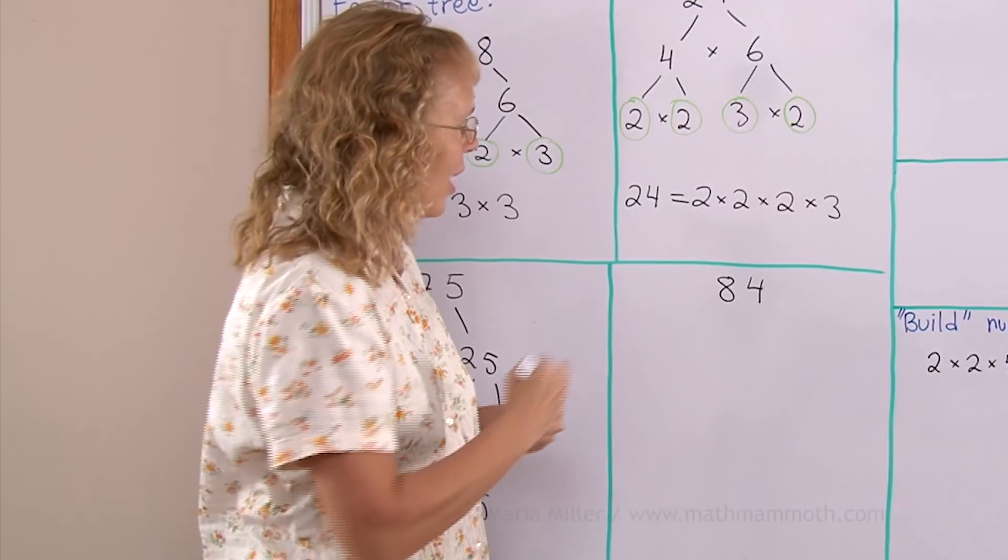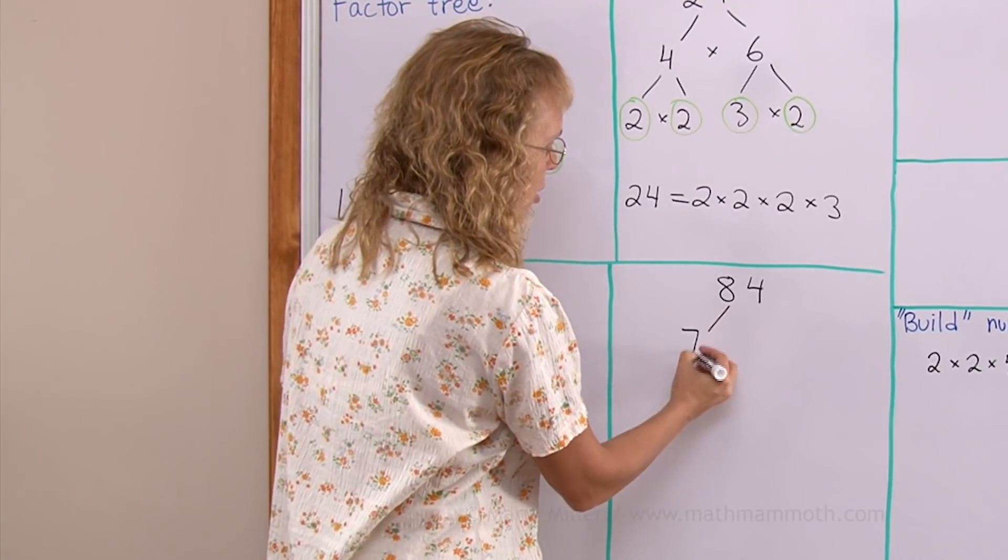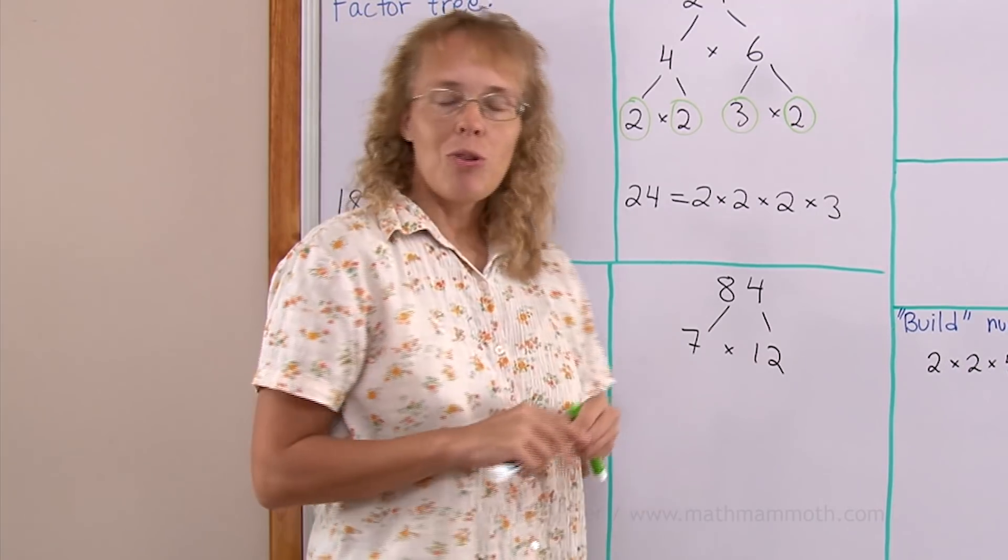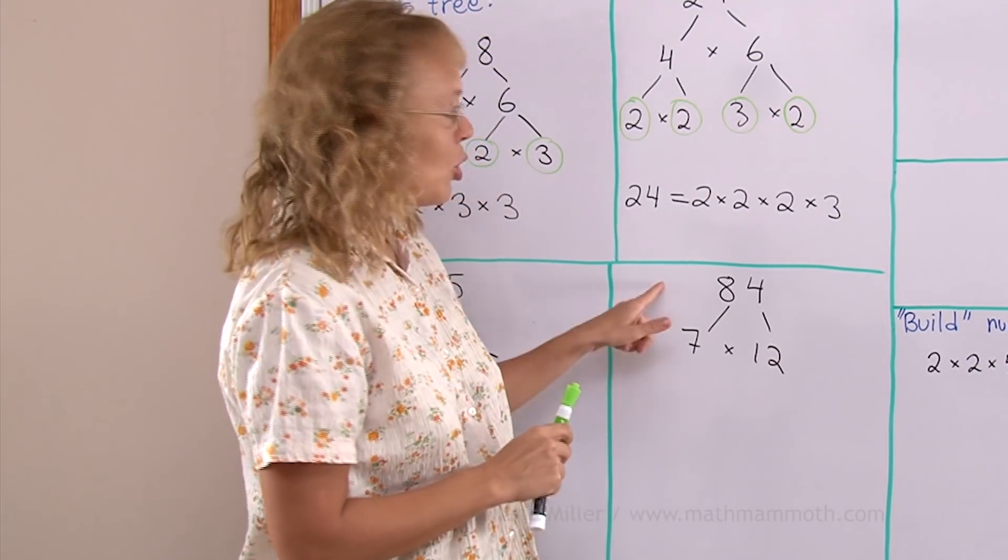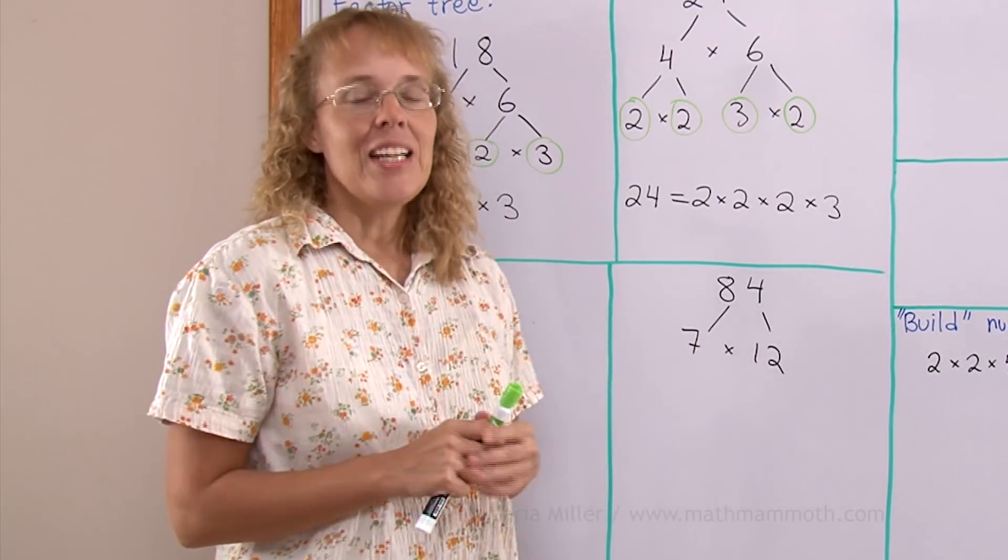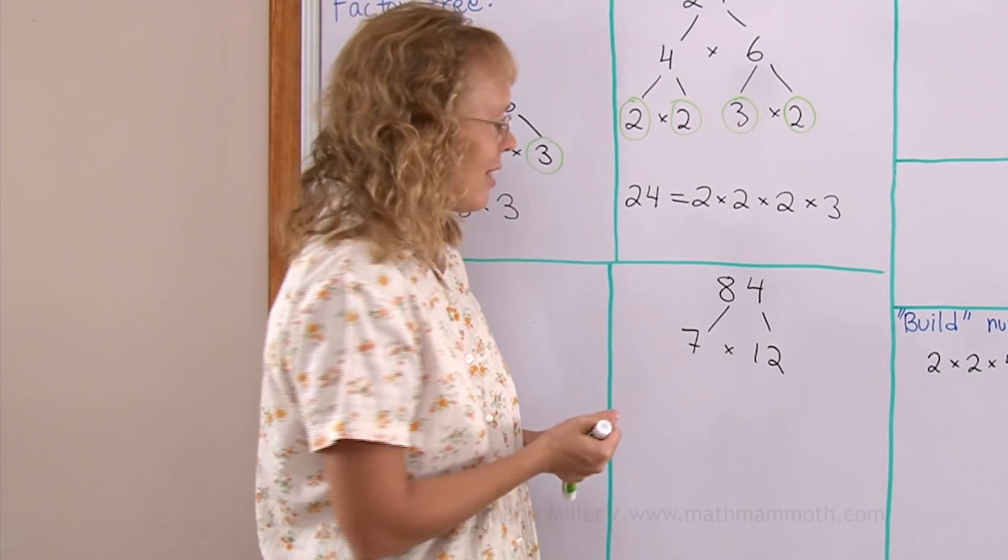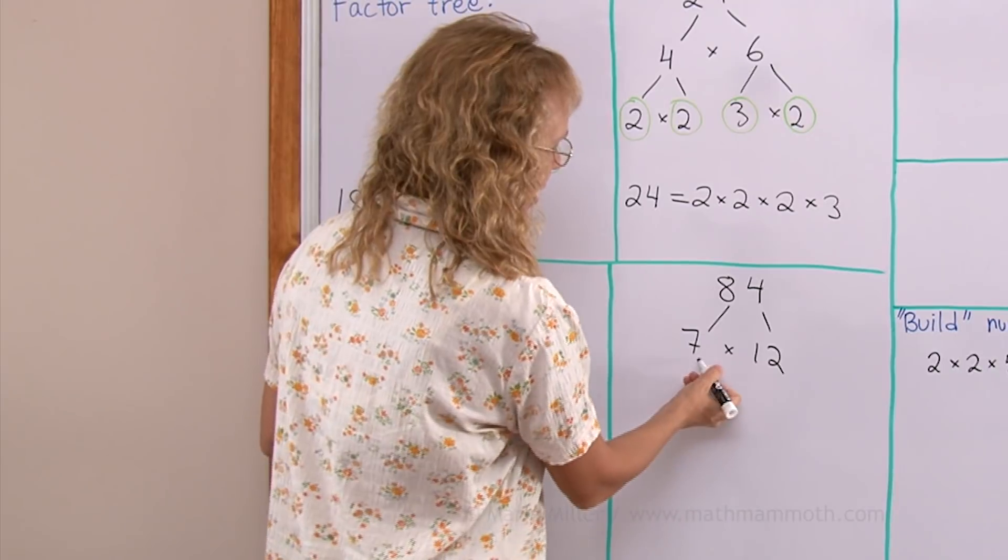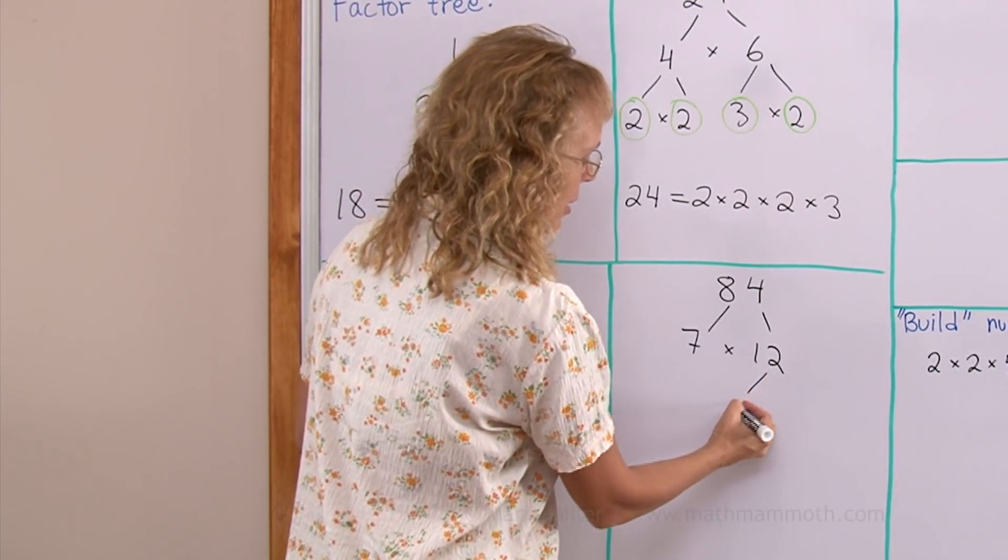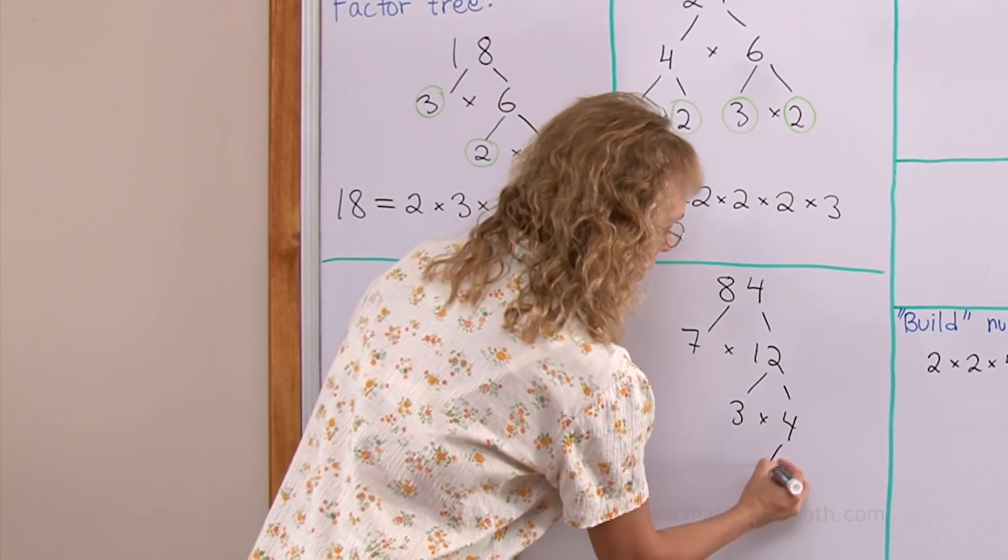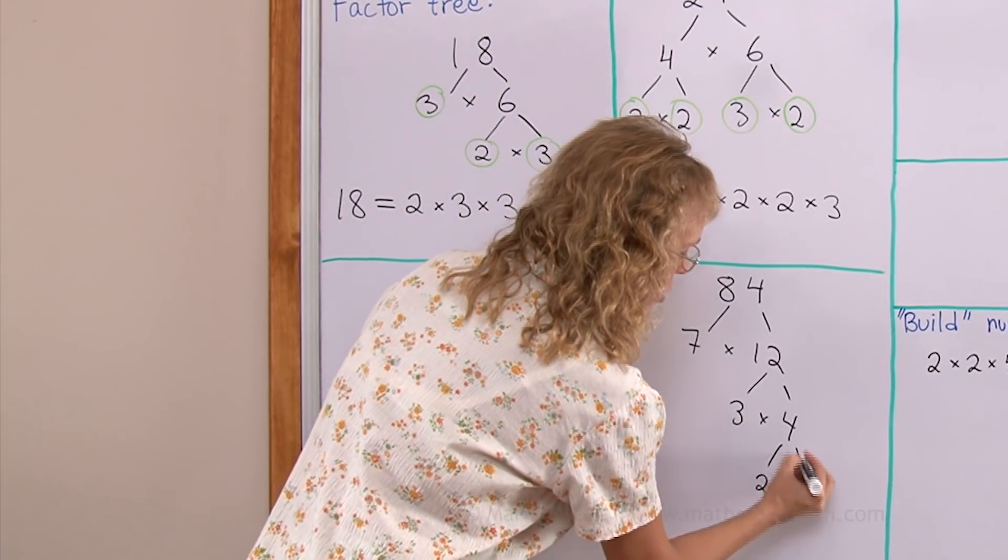84. I happen to remember it's in that multiplication table of 12. But if you don't, you could start out by writing it as 2 times 42. It does not matter how you start. You will get the same result in the end anyway. Then 7 is a prime. This one is 3 times 4, and then 4 is 2 times 2.